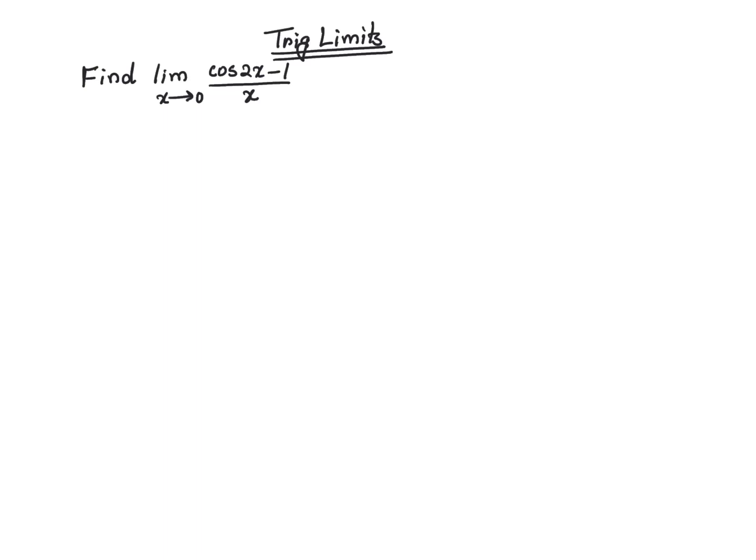In this video, I'm going to find the limit as x approaches 0 of cosine of 2x minus 1 over x.